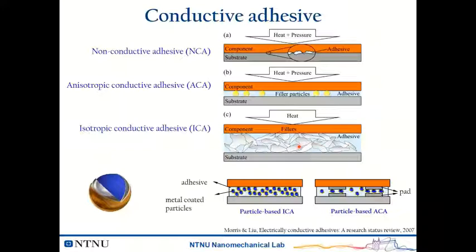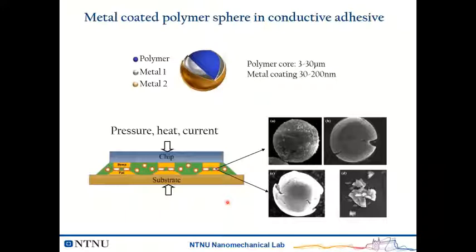Around 15 years ago, Norwegian industry had a new idea: to use metal-coated polymer particles to replace the metal particle or metal flake in ACA or ICA. The advantage is clear. In these composite particles, we have a large volume of polymer, so the property is similar to the adhesive — we avoid structural integrity problems. And since most of the particle is polymer, we save a lot of metal and reduce cost. In the design of metal-coated polymer particles for conductive adhesive, there is usually a large polymer core with size from 3 to 30 microns.